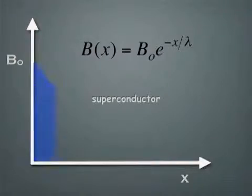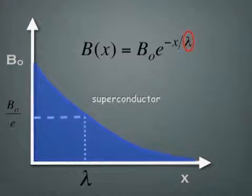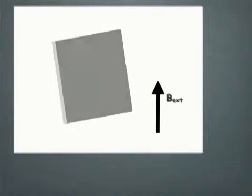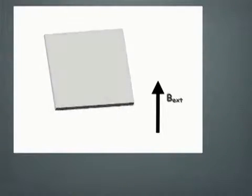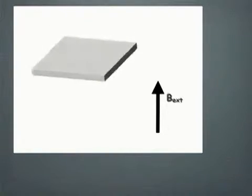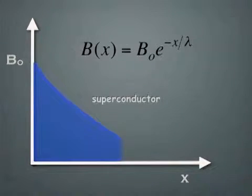In the body of the superconductor both the electric field and the magnetic field are equal to zero. We've seen that the magnetic field decays to zero from the surface over a characteristic length lambda. Similarly, currents only operate in the surface of the superconductor and decay over the same characteristic length.